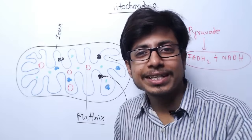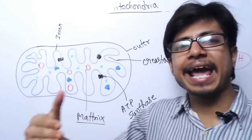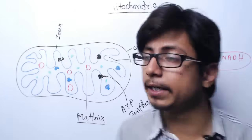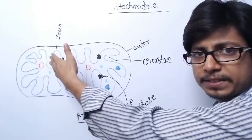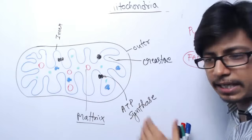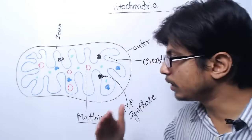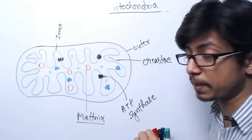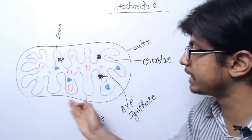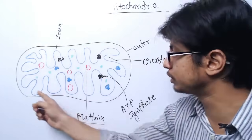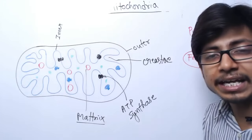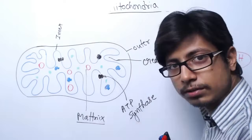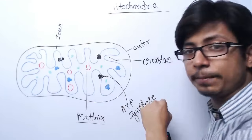These complexes help in carrying and transporting electrons from Complex 1 to 2, from 2 to 3, and finally to ATP synthase. Every time an electron is shifted, some protons are also pumped out into the intermembrane space. Once the protons are pumped into this space, the matrix becomes proton-poor while the proton concentration is higher in the intermembrane space. This generates a concentration gradient of protons. Once protons move down the concentration gradient from the intermembrane space back into the matrix, ATP synthase converts ADP plus inorganic phosphate into ATP.